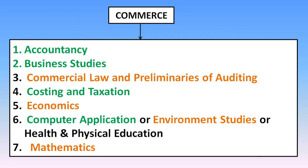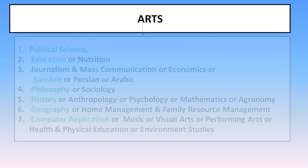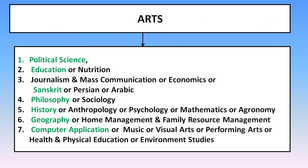For Arts, the best subject combination is History, Political Science, Education, Philosophy, Geography, and Computer Application. This combination is considered the best scoring combination. The language subject is also a scoring subject.